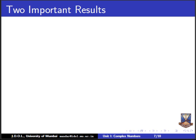Let us go to two important results. First: Z + Z̄ = 2·Re(Z). I am not going to prove it right now — you can pause and do it yourself. Take Z = x + iy, Z̄ = x − iy; adding gives 2x, which is twice the real part of Z. This is a very important result which we are going to use to prove the triangle inequality.